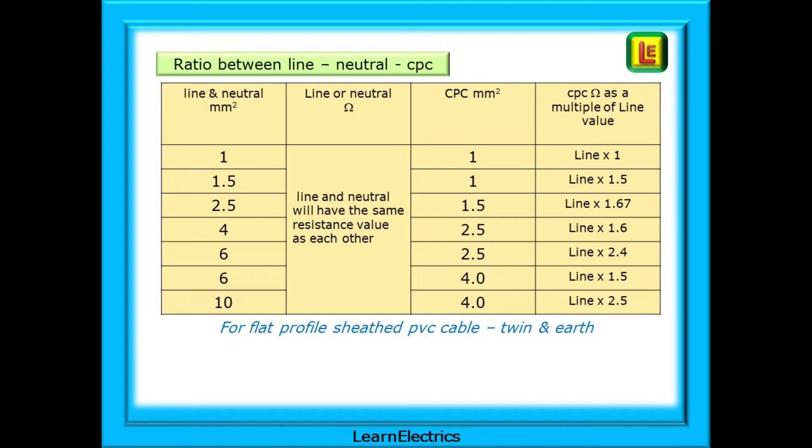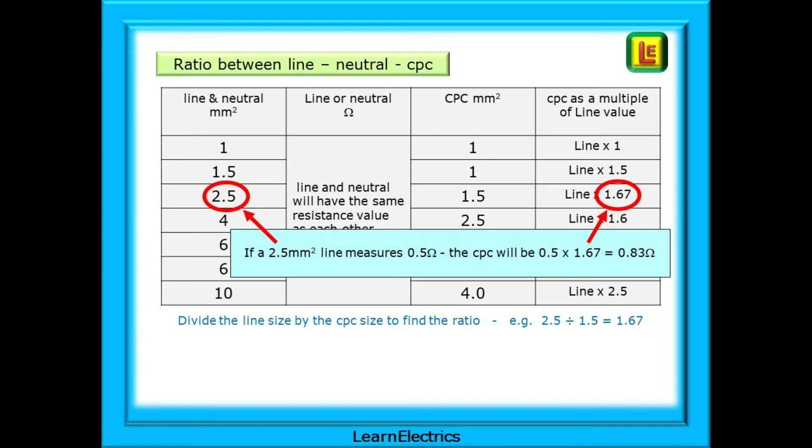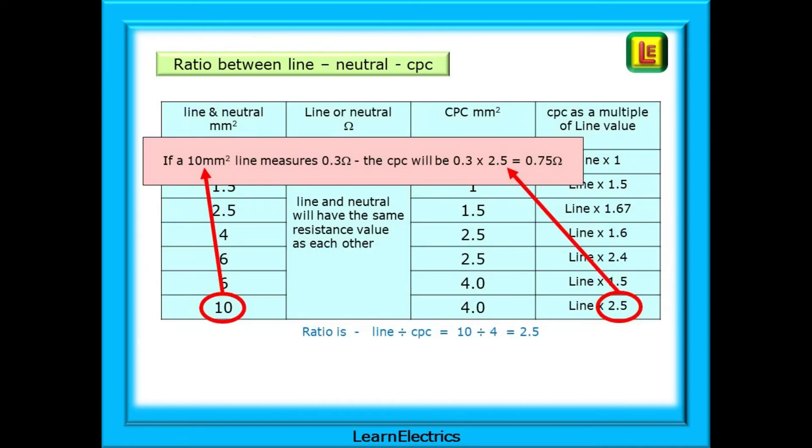To use our current example, if a 2.5 mm line measures 0.5 ohms, the CPC will be 0.5 multiplied by 1.67, which is 0.83 ohms. And if a 10 mm line measures 0.3 ohms, the CPC will be 0.3 multiplied by 2.5 to give us 0.75 ohms. All we have done is divided the line size by the CPC size to get the multiplication factor. This works for any sizes of conductor.